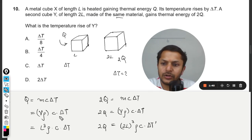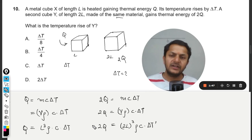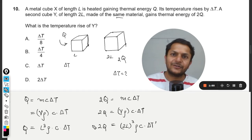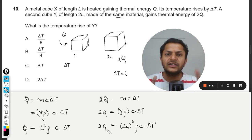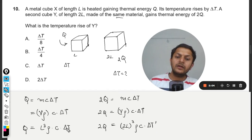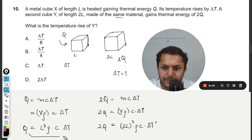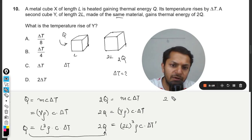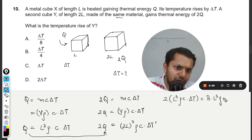We have two equations to solve. The easy method is to find Q from the first equation and substitute it into the second. All constant terms will cancel and we'll be left with ΔT'. Substituting, 2Q becomes 2 × l³ρcΔT, and (2l)³ = 8l³, so it becomes 2l³ρcΔT = 8l³ρcΔT'.